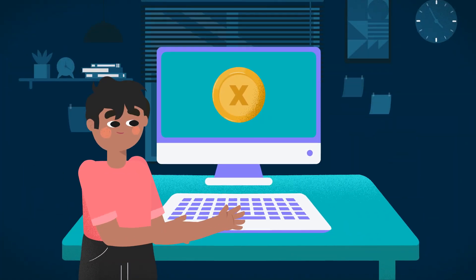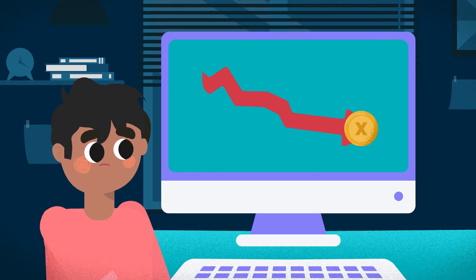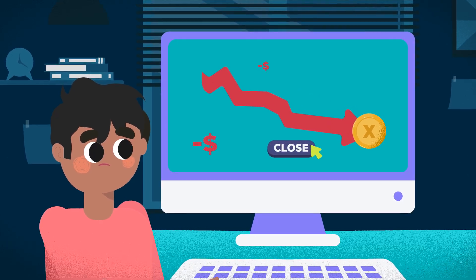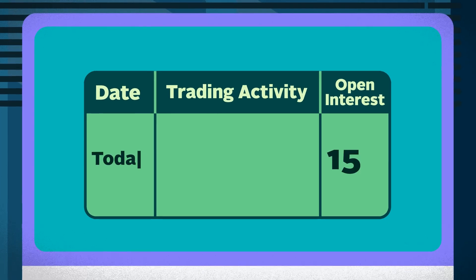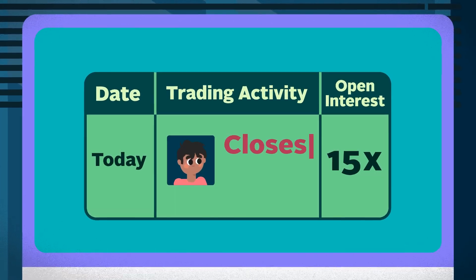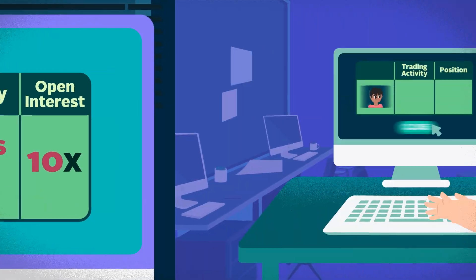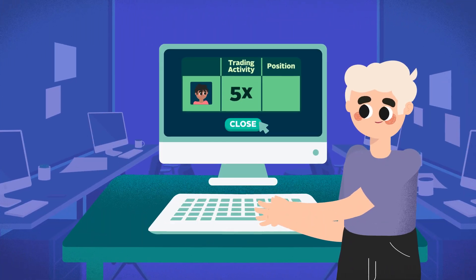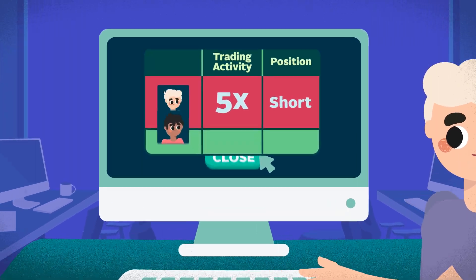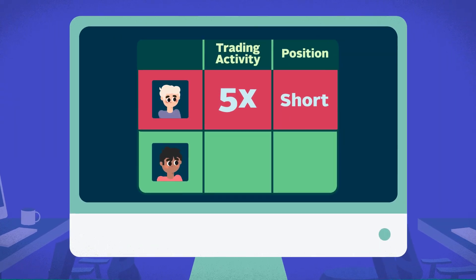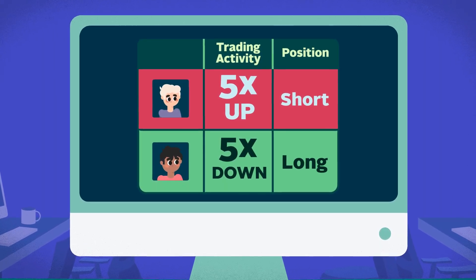Fast forward to a day later, the price of X fell, and Sam decided to close half of his position to limit his loss. That means the open interest decreases to 10X after Sam closes a 5X position. Barry then decides to take profit, closing out his entire 5X short position, bringing the open interest down to 5X from Sam's remaining long position.